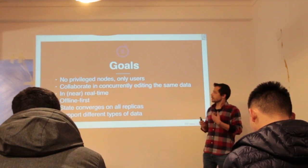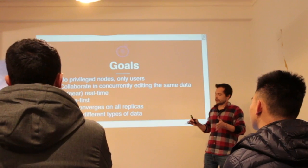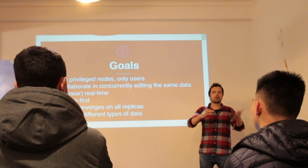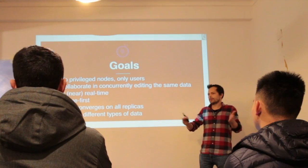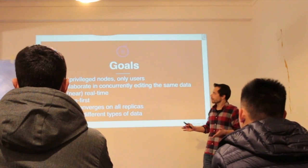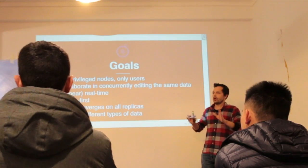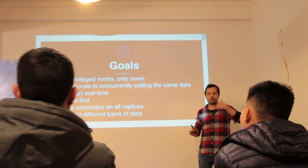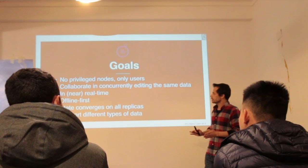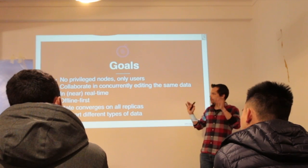Let's trace some goals first. I want to enable decentralized collaboration between two or more peers for editing any type of data, like a document, a set, or a map. In this network, no nodes should be special — all nodes should be only users. So if I'm collaborating with a user, I just want two nodes in the network and no one has special privileges on that document.